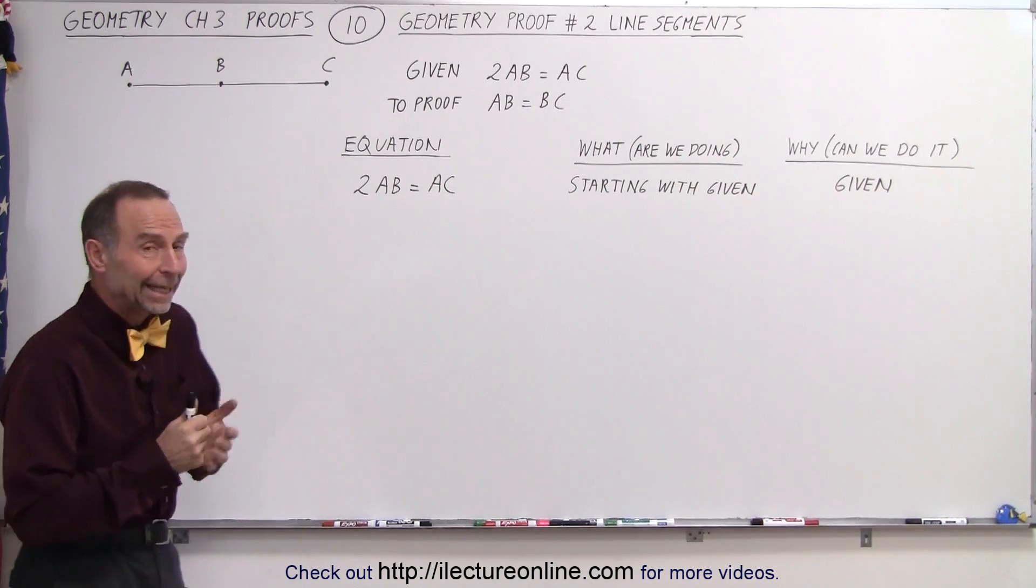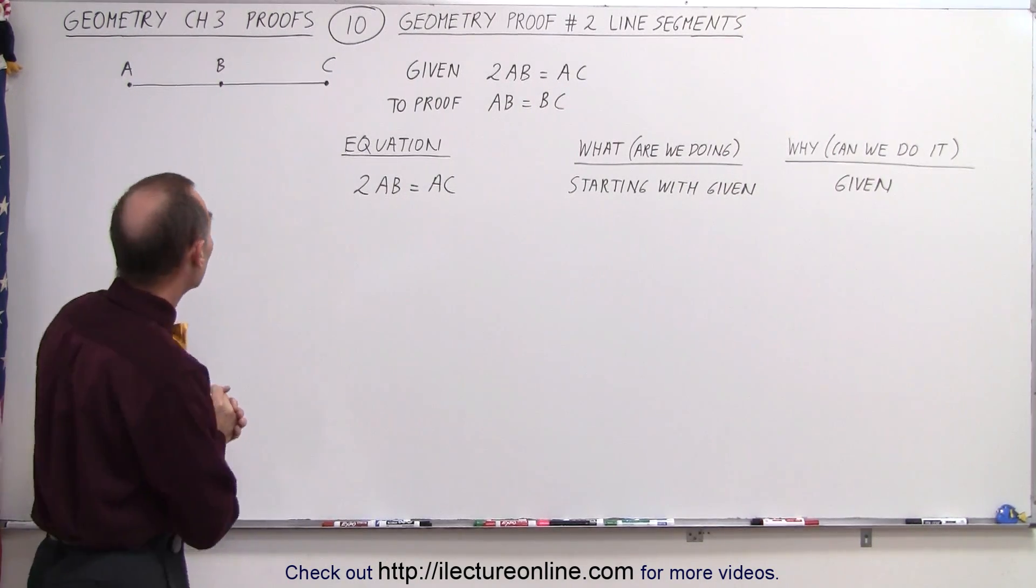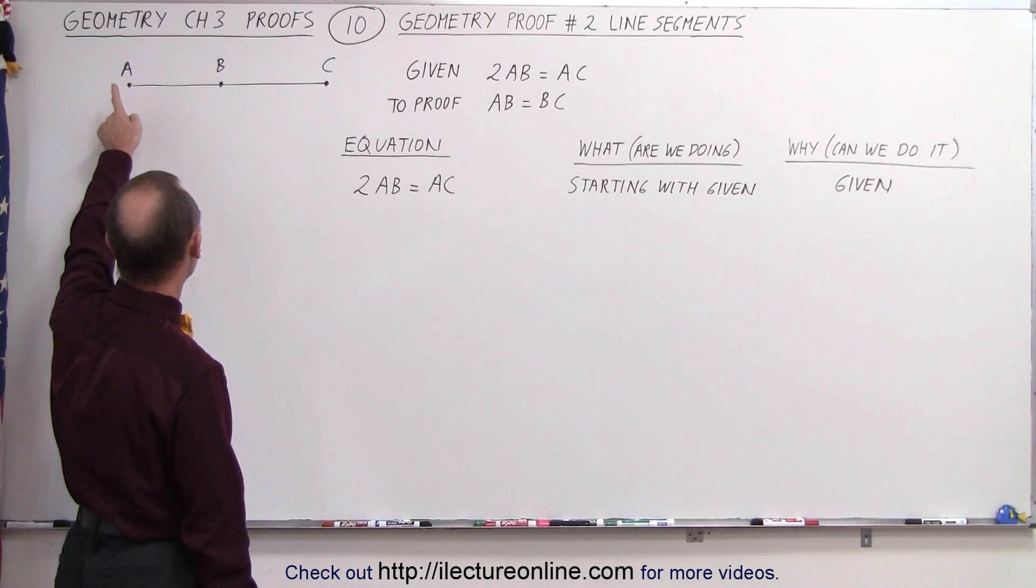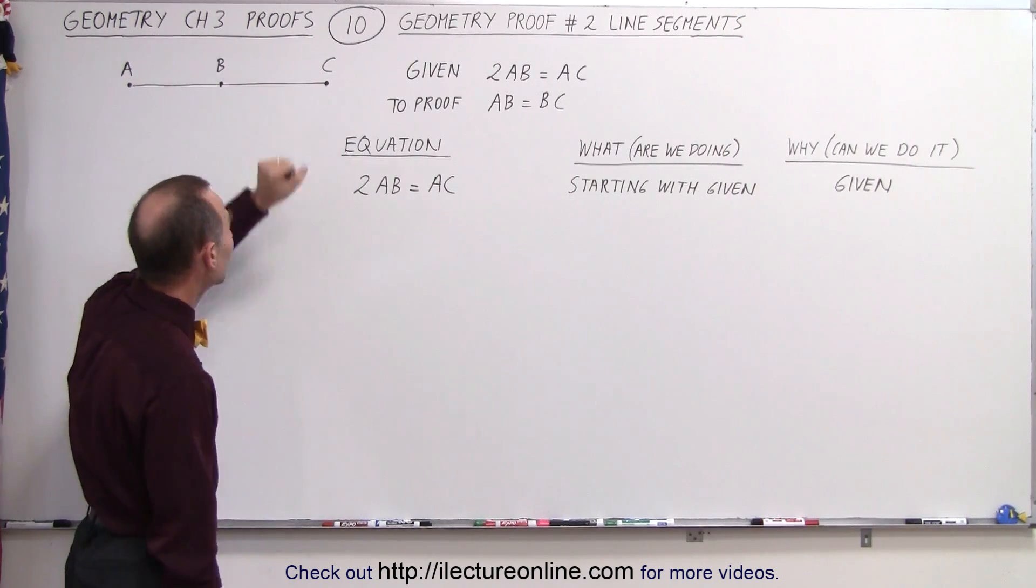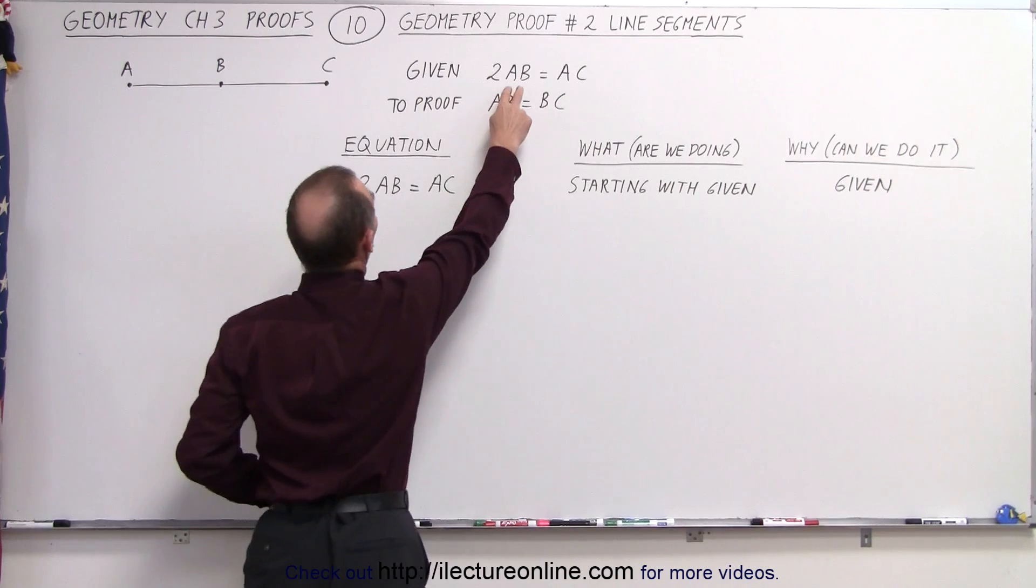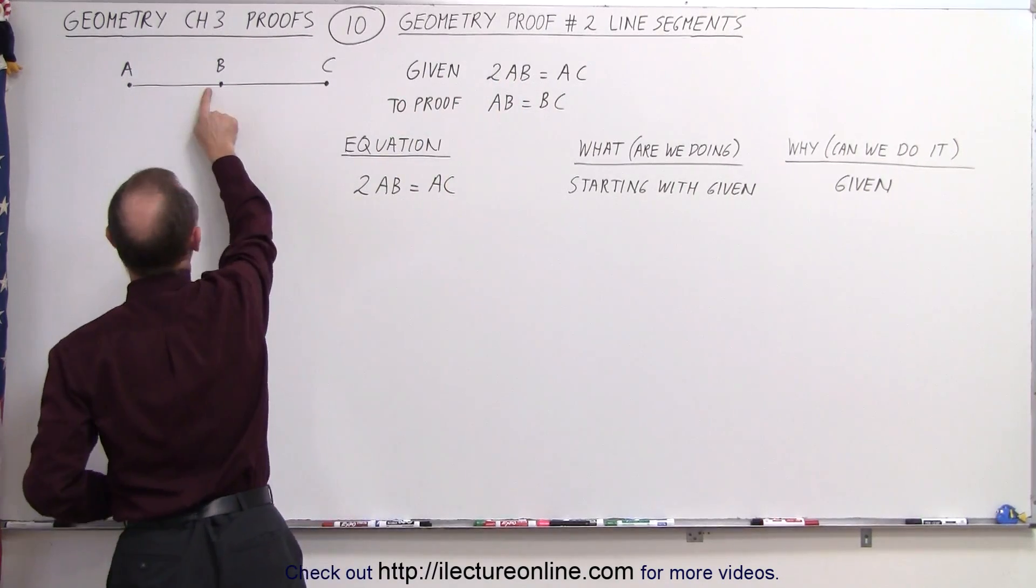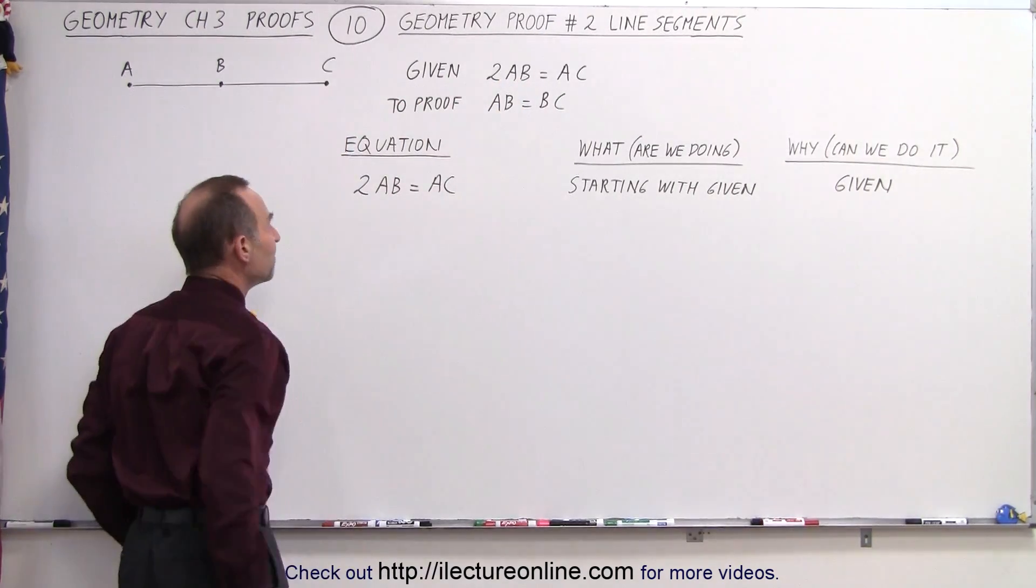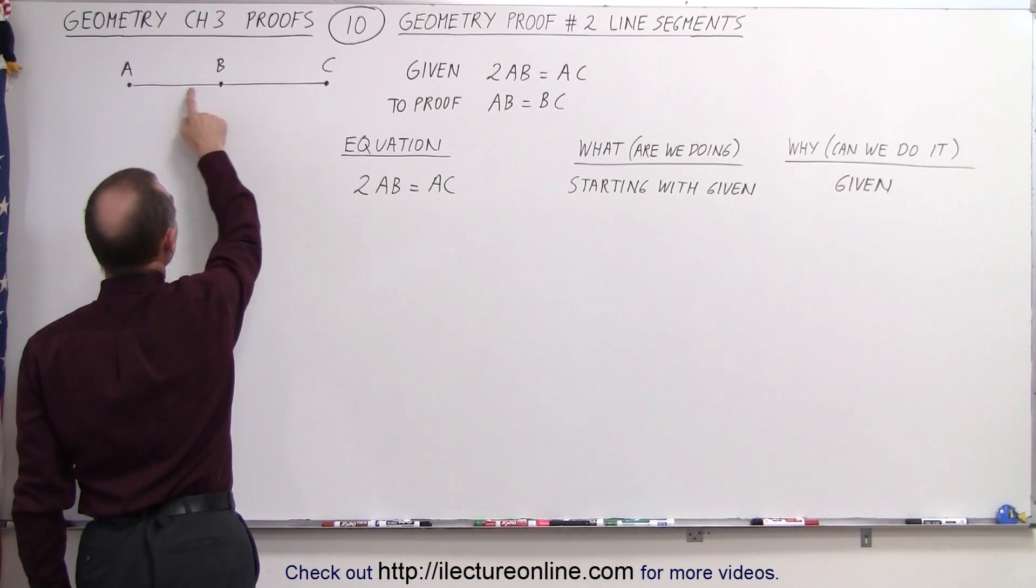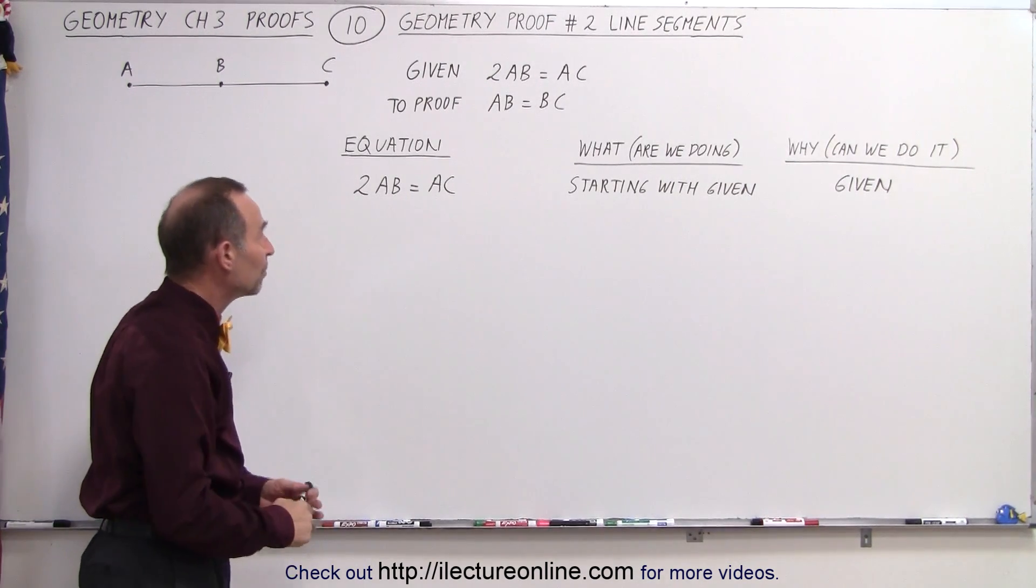We're going to be dealing with line segments. We have the line segment AB, the line segment BC, and together of course we have a line segment from A to C. We're given that twice the length of AB is equal to AC, and we're supposed to prove that the length of segment AB is equal to the length of segment BC.